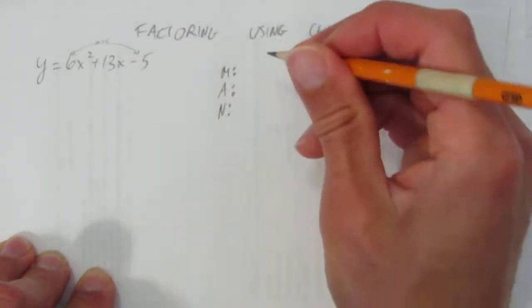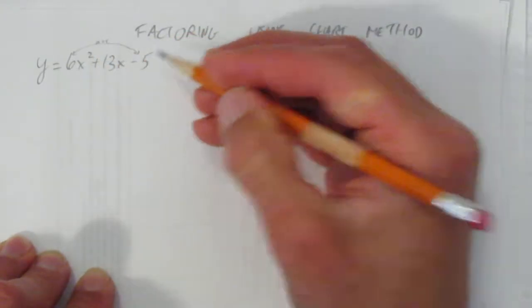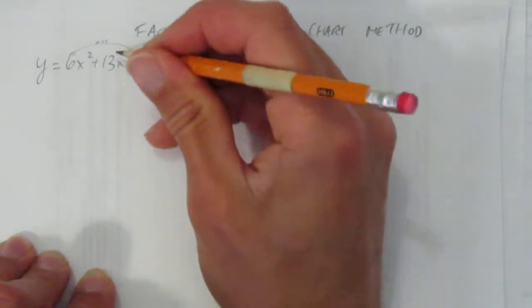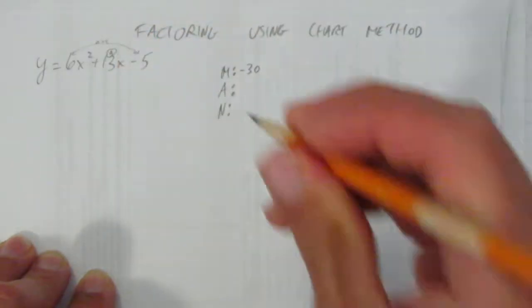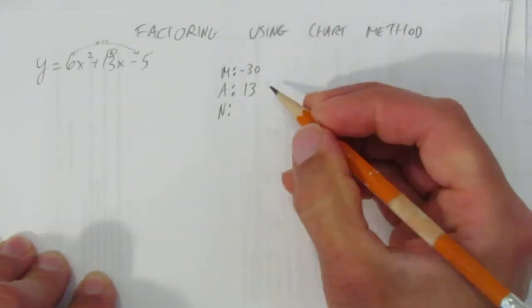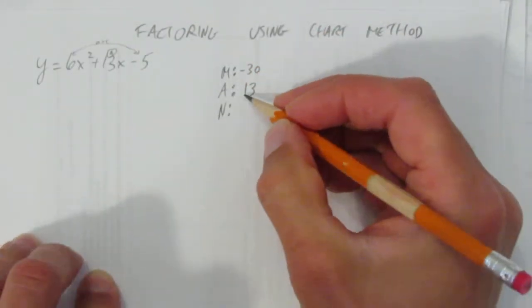What are you trying to multiply to? In this case, negative 30, 6 times negative 5. The a value is still here at 13. We're trying to multiply to negative 30 and add to 13.